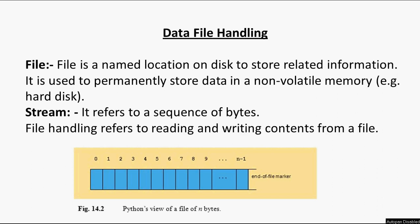The concept of file: normally in a program, whatever data we store — either in a variable, list, tuple, or dictionary — wherever we store the data, we process and display it onto the monitor. The moment we exit from the program, the data is vanished.